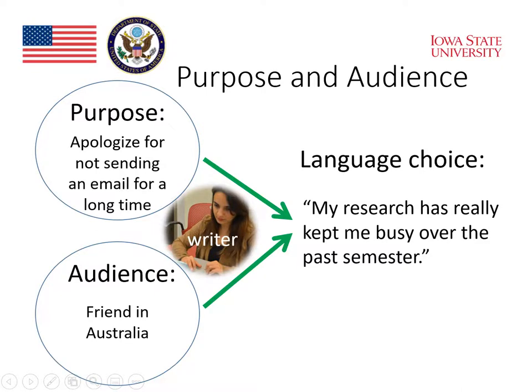Let's take a closer look at what Professor Kotos means by purpose and audience. For example, we have a writer who is a graduate student at Iowa State University, and she is writing an email to her friend in Australia. The friend in Australia is going to be the audience for the email. Even if there's only one person, we consider her the audience, because she is the person that is going to receive and read the email. She's the one that we need to write appropriately for.